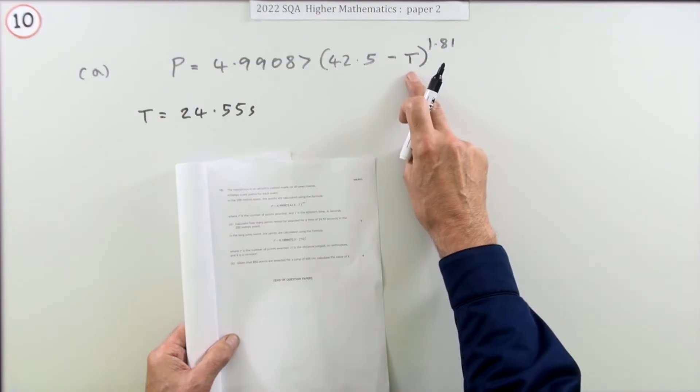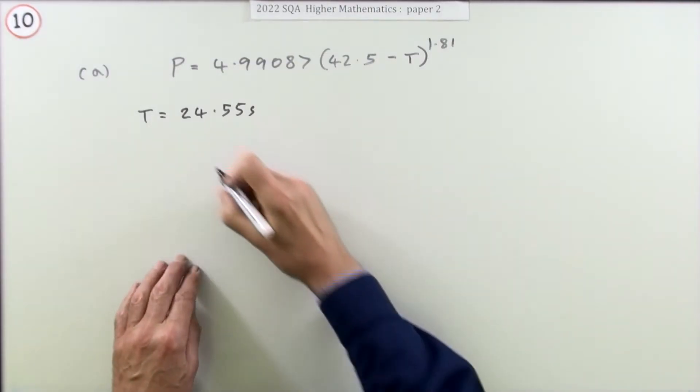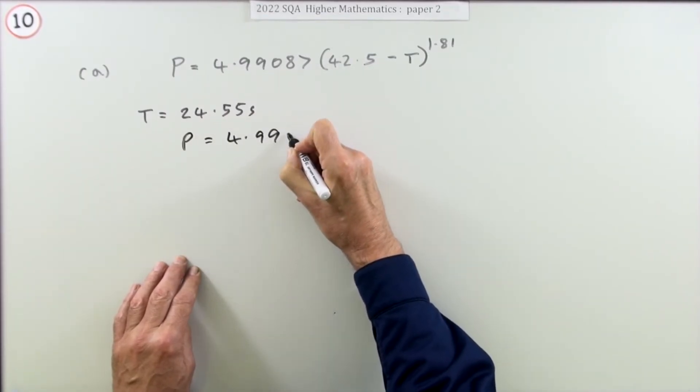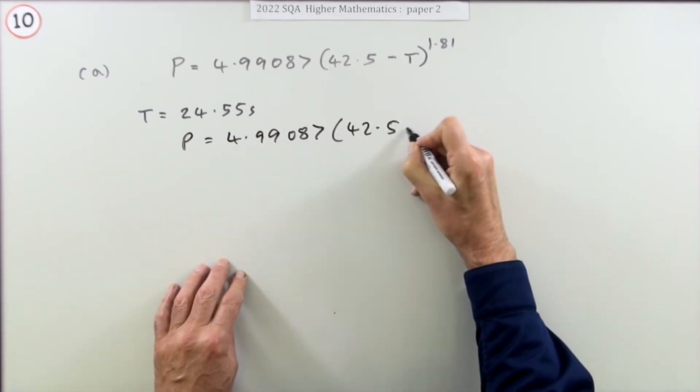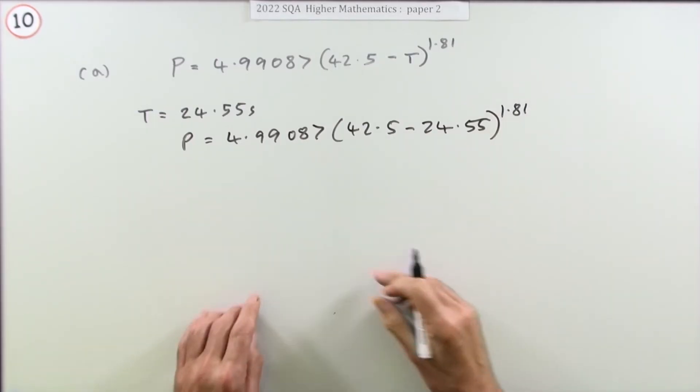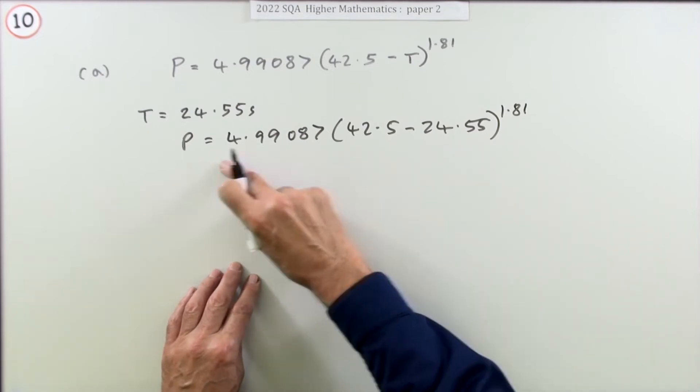That means P is going to be 4.99087 times (42.5 minus 24.55) to the power 1.81. Now there's no need to simplify—there's only one mark, so you could just type that in in one go.